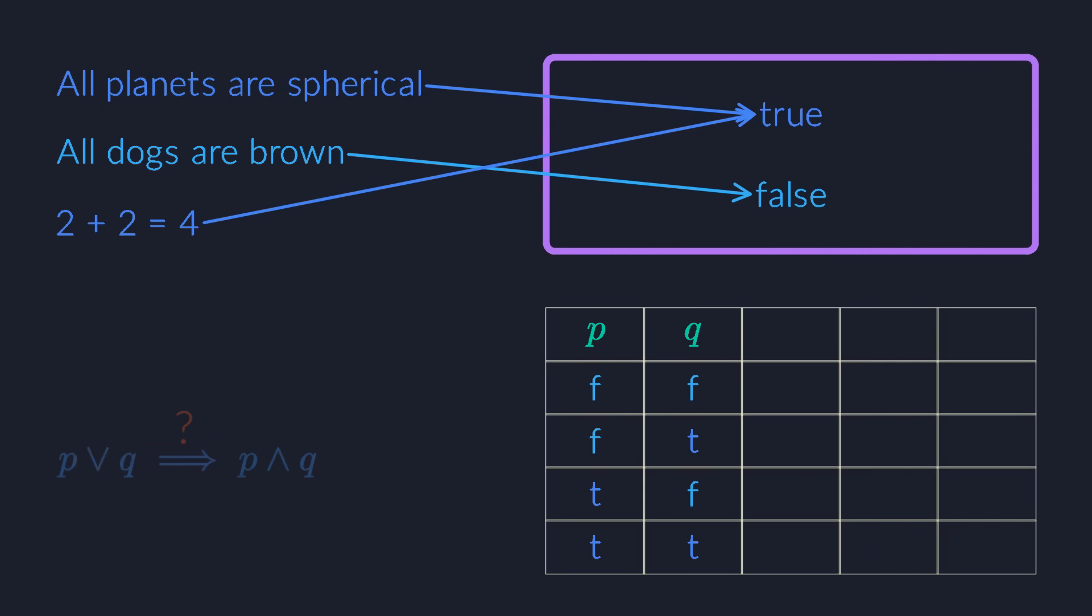Here's another example in which the final column contains not only true values, but also false ones. This means that this statement is not true in all possible universes, under all possible mappings. So this time, the right side of the arrow doesn't follow logically from the left.